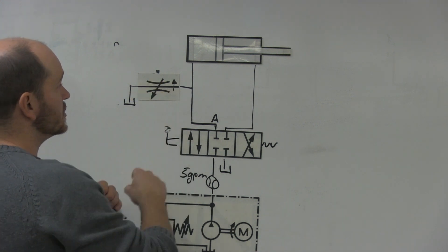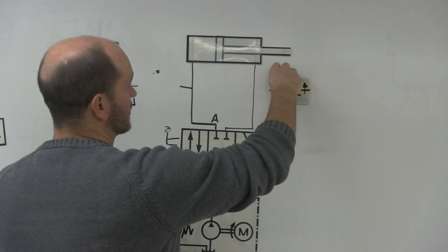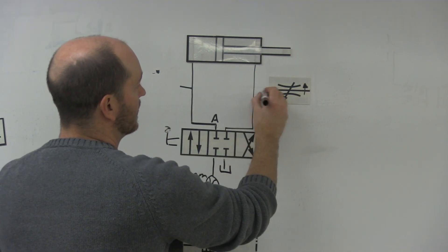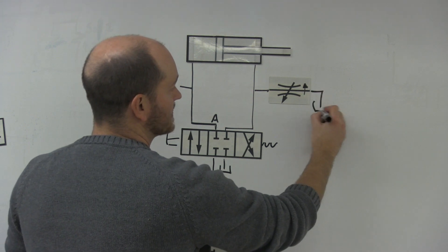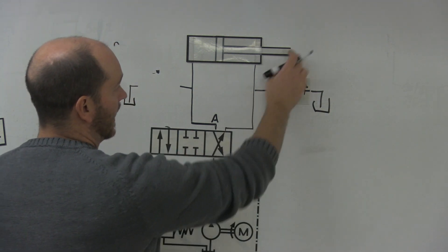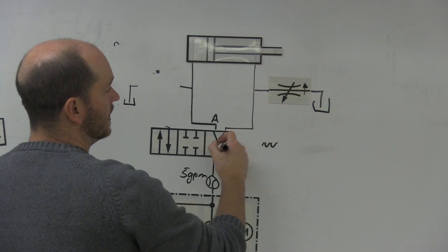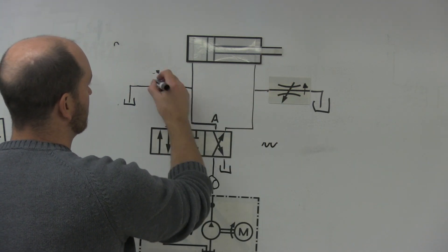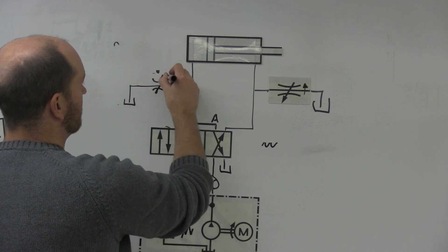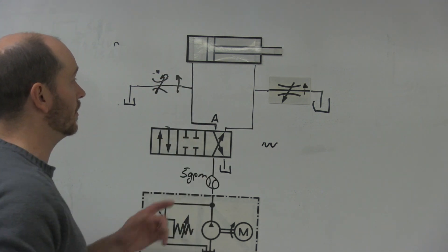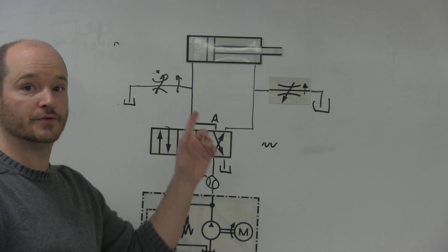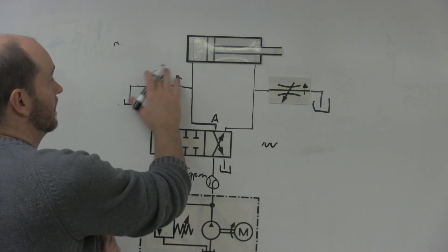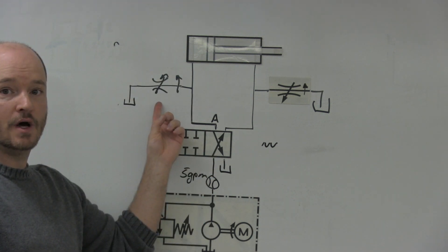Now, just so you know, if I wanted to make this a bleed off circuit in this direction, all I would do is just drop this down here. And then when I go to retract, if I have a load on here, part of this is going to be filtered through here. And if I wanted a flow meter in both directions, if I wanted to control the speed in both directions, I would draw it up like this.